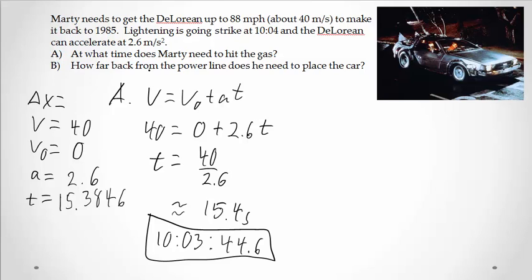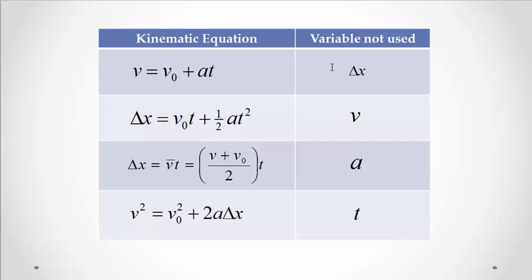So for part B, we want to know how far back from the power line does he need to place his car. So basically, we're saying how far back does he need to start, assuming he's going to be right at 40 meters per second right when the lightning strikes. So now we're going to find displacement. Since everything else is filled out, I can use any of these equations other than the first one. But I probably want to avoid these guys as well since then I don't have to worry about that rounding error for my time. So I'm going to grab this equation here.